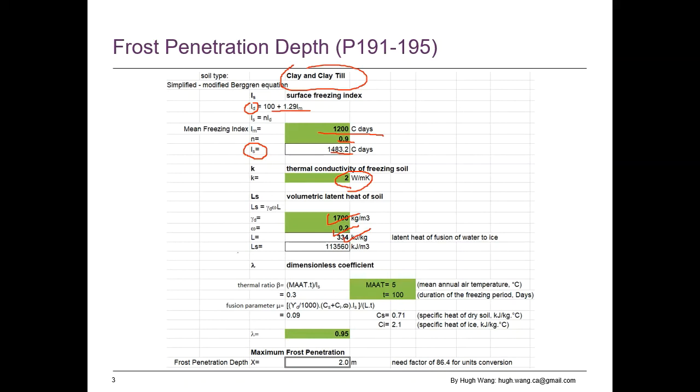Then we can get the volumetric latent heat of the frozen soil. Last is the estimation of the lambda coefficient. The lambda coefficient is related to the thermal ratio beta and the Fourier parameter. Those two parameters can be estimated based on the mean annual air temperature and the duration of the freezing period. The specific heat of dry soil and specific heat of ice is also required. Based on all those inputs for the soil, for the clay, clay tail soil, as the project set, the estimated frost penetration depth is about 2 meters.